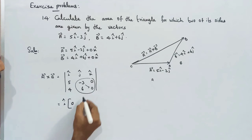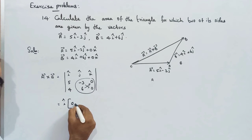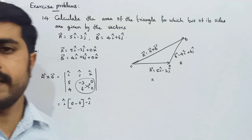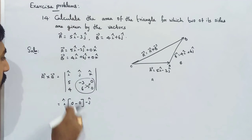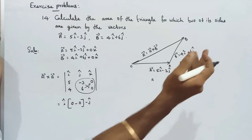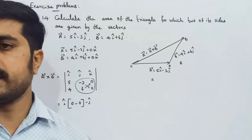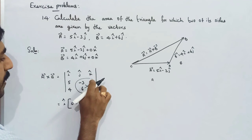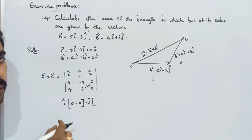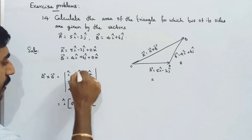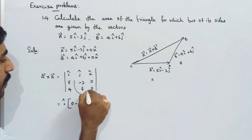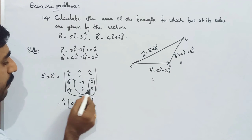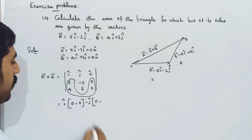For the i-cap term: minus 3 into 0, minus 6 into 0. For the j-cap term, applying the minus sign: minus of (5 into 0, minus 4 into 0). The sign pattern is plus, minus, plus. So we write plus for the k-cap term.